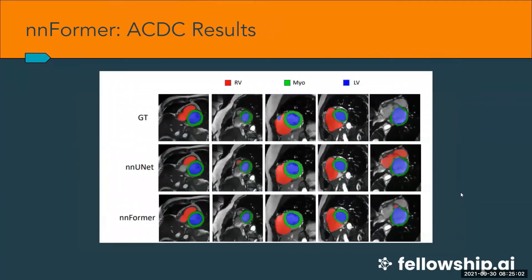In the visual representation of the Synapse results, the ground truth shows all the different organs — the liver, pancreas, stomach, gallbladder, and more. Comparing nnUNet and Informer for every sample, Informer performs slightly better. For the ACDC dataset — the segmentation of heart structures including the left atrium, left ventricle, right ventricle, and the thick middle wall represented in green — nnUNet sometimes misses some partitions of the organs, whereas Informer matches up with the ground truth, showing it works well for both datasets.